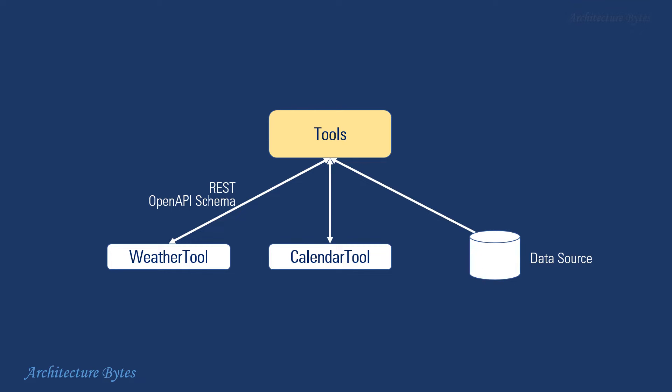For example, a weather tool can be invoked over REST and its interface is defined by an OpenAPI schema. Similarly, a data source can be queried to extract necessary information.